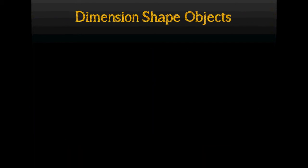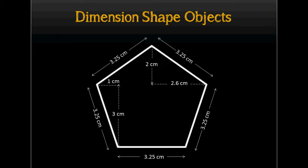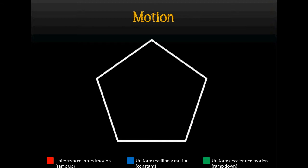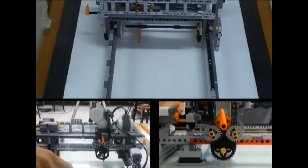Second, we want to make a pentagon. The dimension of the pentagon we will make is shown in the picture. We define the length of the lines in centimeters, then convert them into rotations in the same way as before. As you can see, there is the motion diagram overall. The red arrow explains uniform accelerated motion, the blue arrow explains uniform rectilinear motion, and the green arrow explains uniform decelerated motion. Now let's go ahead and look at the demonstration video.